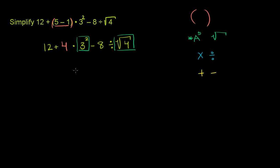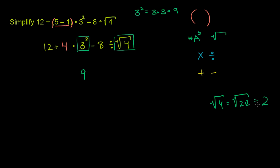3 to the second power is 9 — that's the same thing as 3 times 3. It is not equal to 3 times 2; it's 3 times 3. So 3 squared is 9. And the square root of 4 — what non-negative number times itself is equal to 4? It's 2. This is the same thing as the square root of 2 times 2, which is equal to 2. So the principal root of 4 is 2.